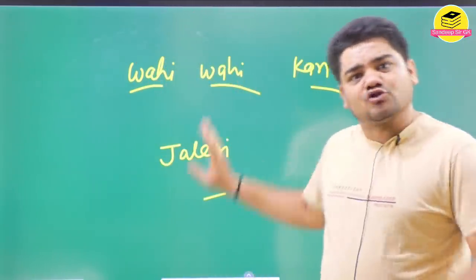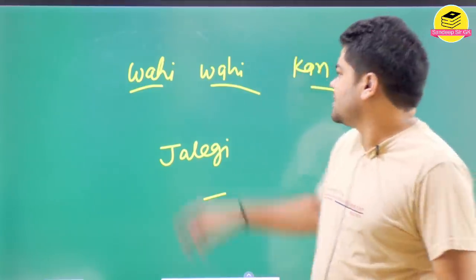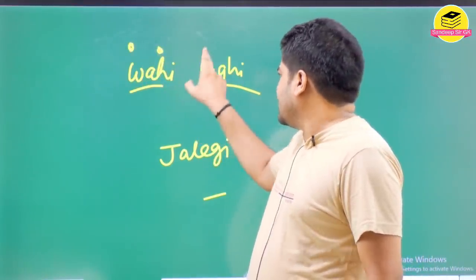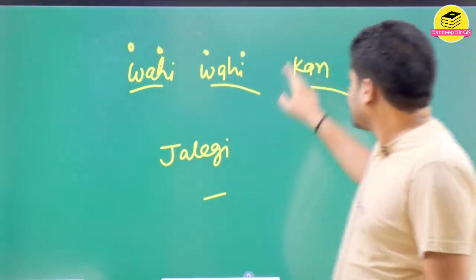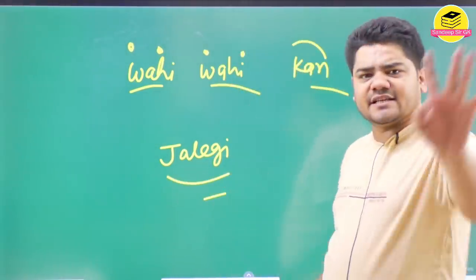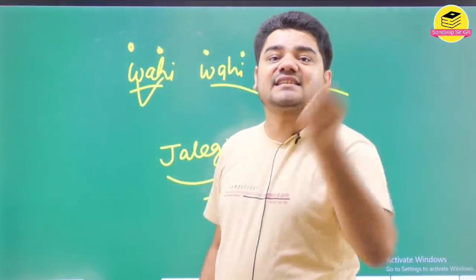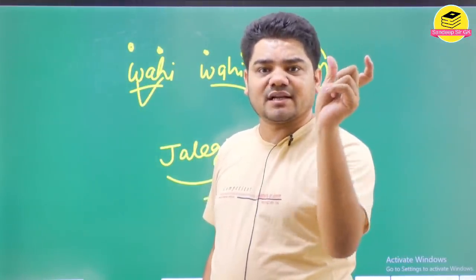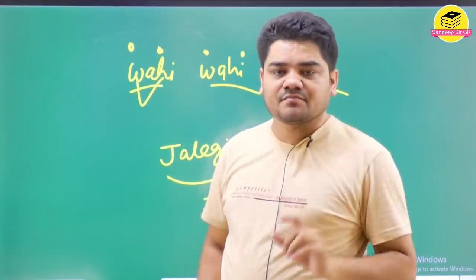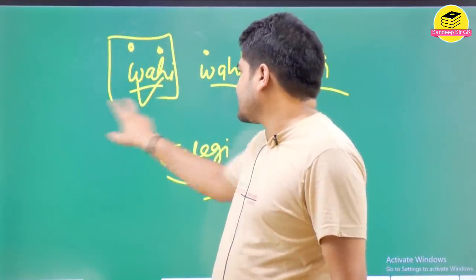WH, catch this. Here also WH, catch this. Where will it go? From where to where? Remember this. WH means Warren Hastings. Warren Hastings, Warren Hastings. Who was in the first war? Warren Hastings.